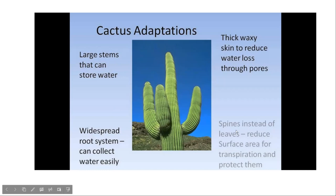The cactus also has spines — the spiky parts. These provide protection: without spines, the cactus would be great at obtaining and retaining water but extremely vulnerable to animals that would realize there's water inside and rip it apart. The spines also help reduce water loss compared to having actual leaves instead.